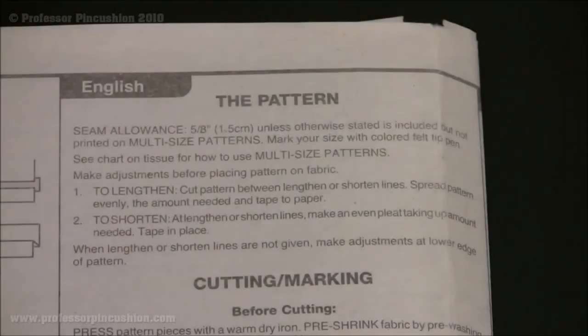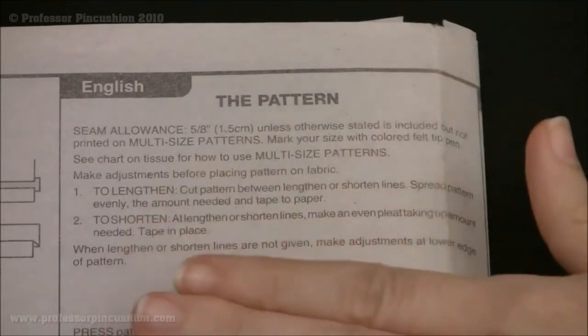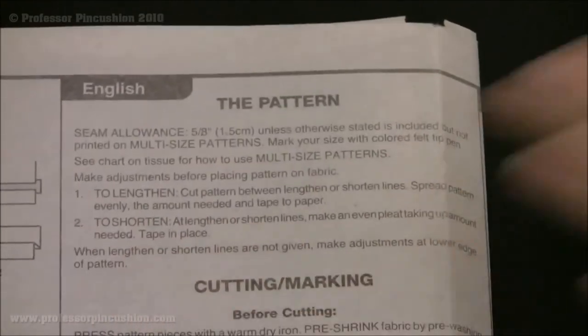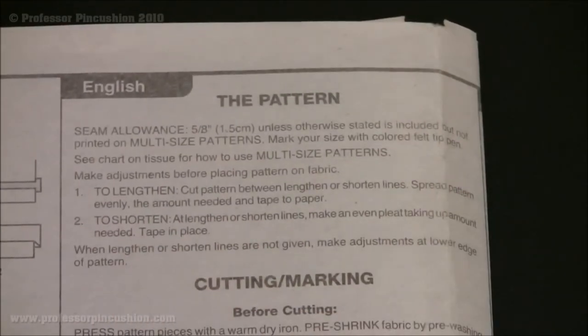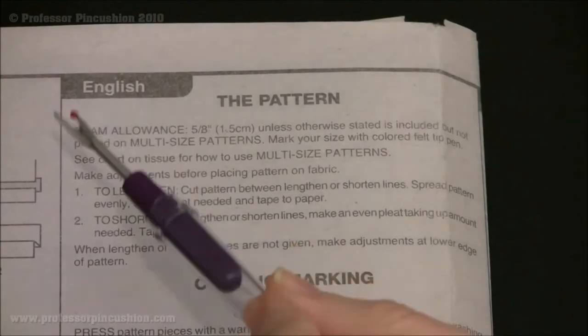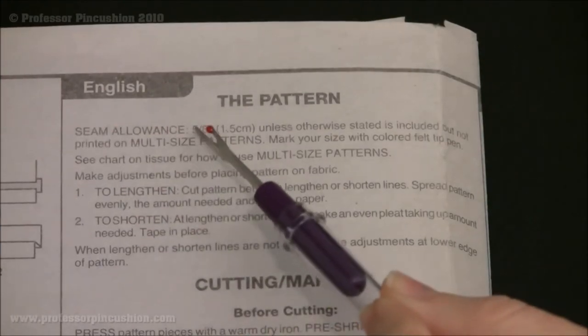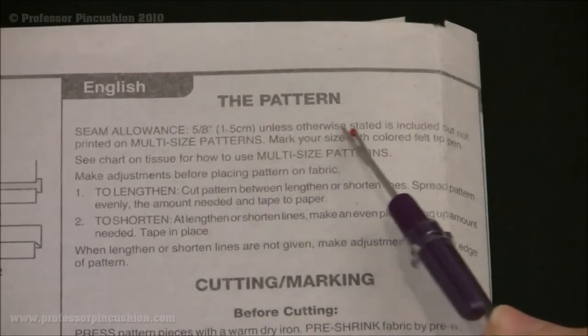You want to consult with your pattern directions in order to find out what the seam allowance is. You're going to find this information either on the pattern directions inside the envelope or sometimes it's on the pattern piece itself. What you're looking for is right here where it says seam allowance five-eighths of an inch unless otherwise stated.